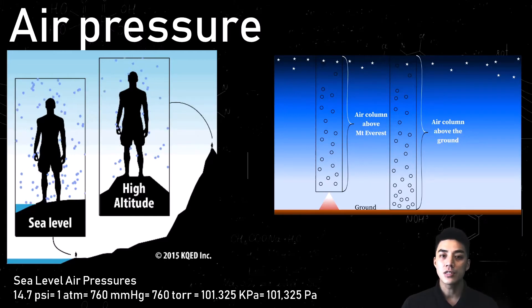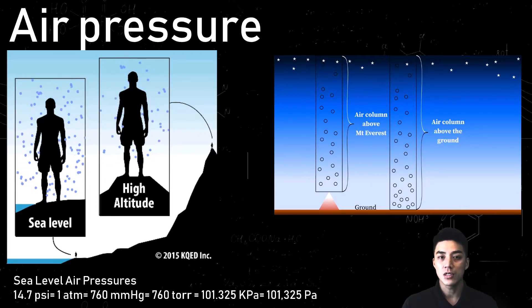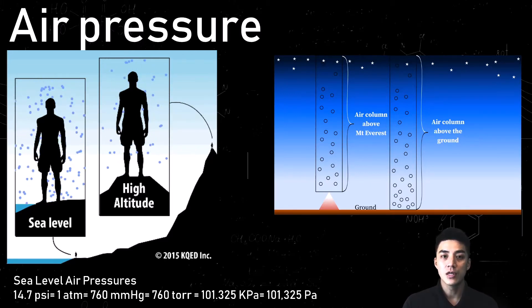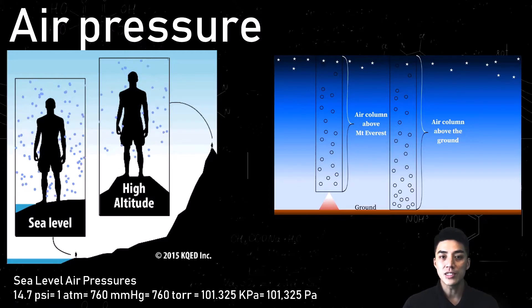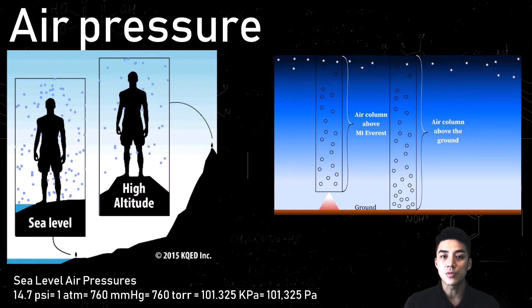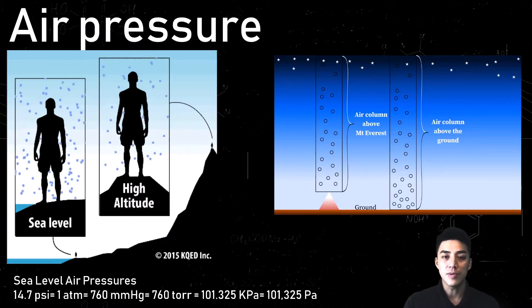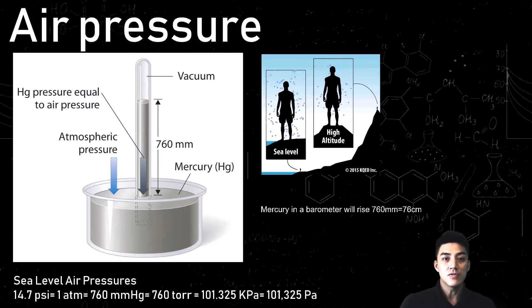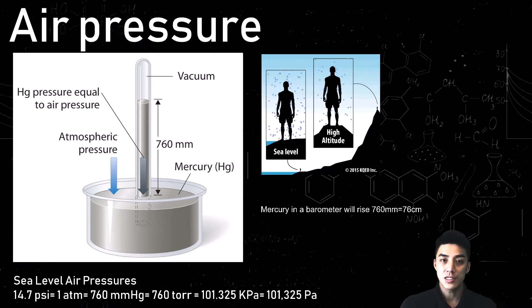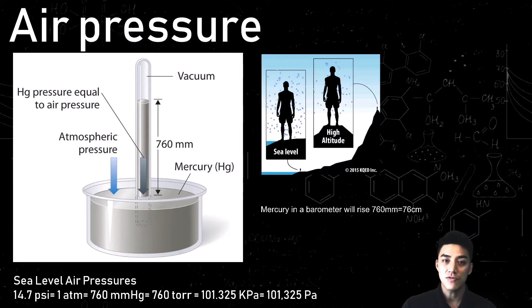Other units of air pressure include atmospheres — so at sea level, one atmosphere — or you could say 760 millimeters of mercury, or 760 torr, or 101.325 kilopascals. At sea level, the mercury inside a barometer, which is a tool used to measure air pressure, will rise to 760 millimeters, or 76 centimeters, which is roughly 2.5 feet.